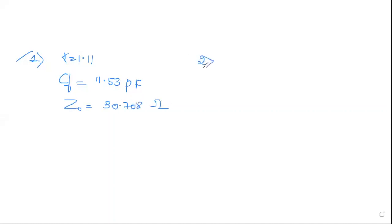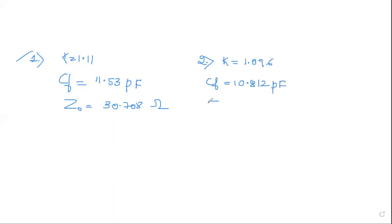What about the second one? K is equal to 1.096. Say it. 10.812. Equal to zero: 22.78.